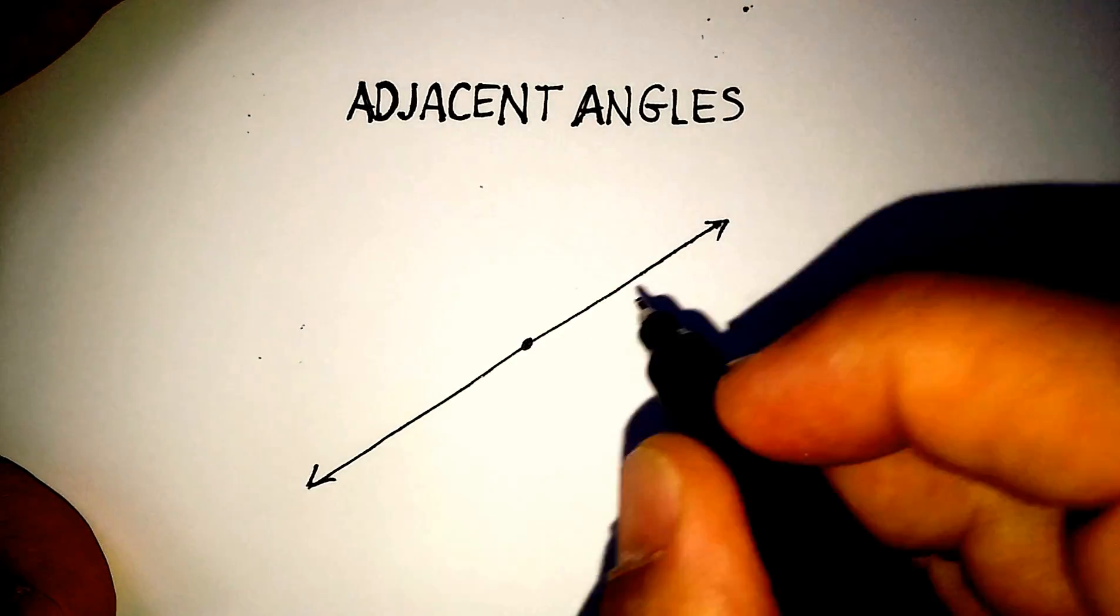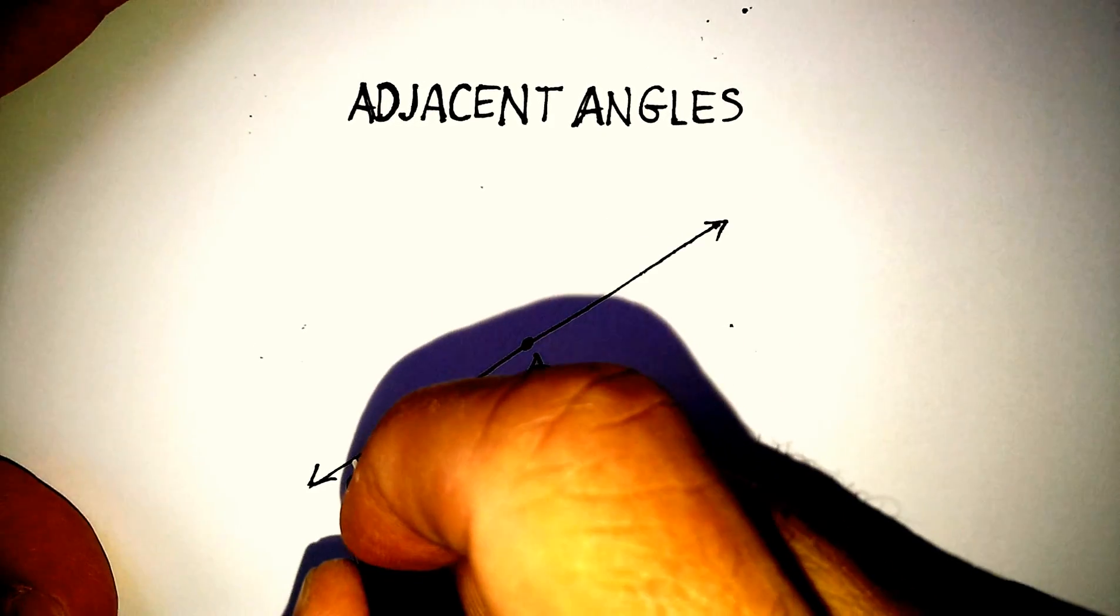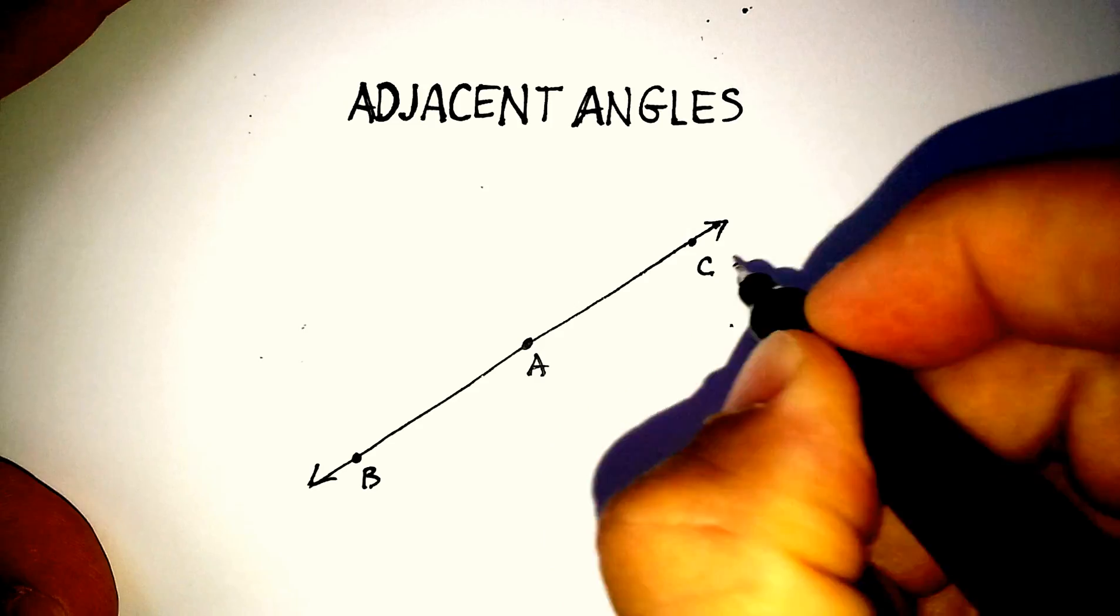Let's put a point right in the middle. In a sense, we'll call this point A, let's call this point B, and let's call this point C.